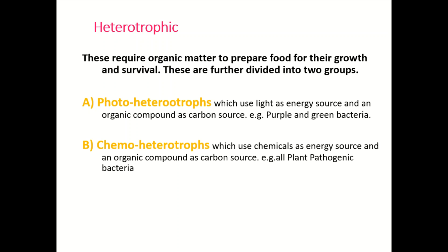Heterotrophic bacteria are further divided into two groups. Photo-heterotrophs use light as an energy source and an organic compound as a carbon source; examples are purple and green bacteria. Chemoheterotrophs use chemicals as an energy source and an organic compound as a carbon source; all plant pathogenic bacteria are examples of chemoheterotrophs.